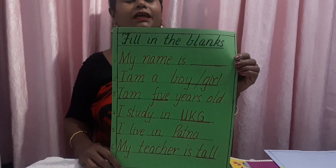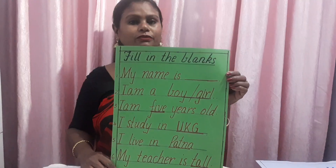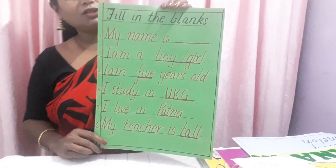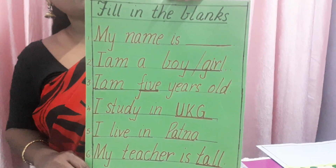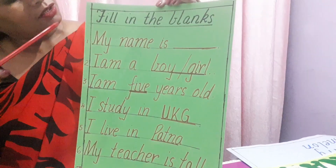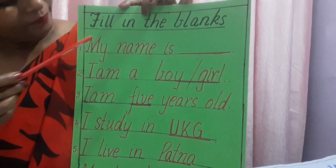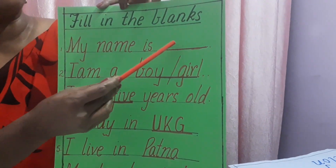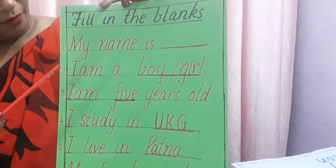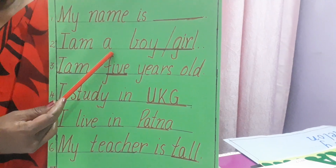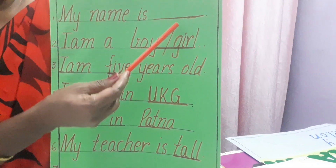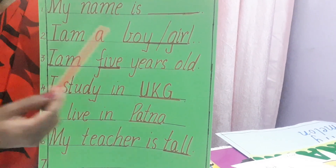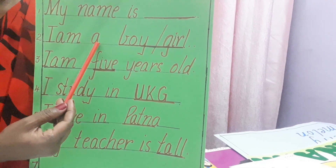Well students, in your previous class I taught you myself and my class teacher. So this chart I have prepared showing you how to do fill in the blanks. This is the way children you have to fill in the blanks. Number one, my name is Tash — you have to fill in your name. Number two, I am a boy — I have written girl, so the boy will write boy and the girls can write I am a girl.